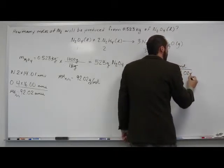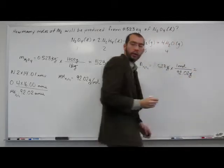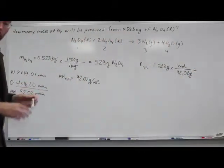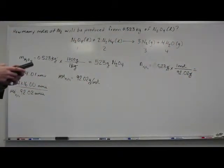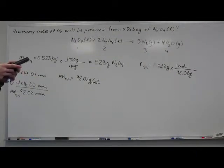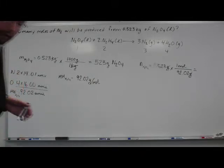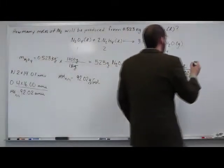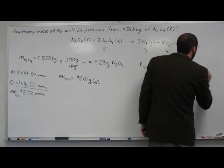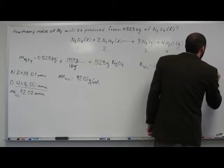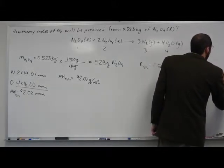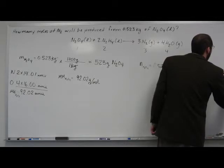Grams cancel, leaving us with the number of moles. So, just take our calculator. 523 divided by 92.02. That gives us approximately 5.68 moles of N2O4.